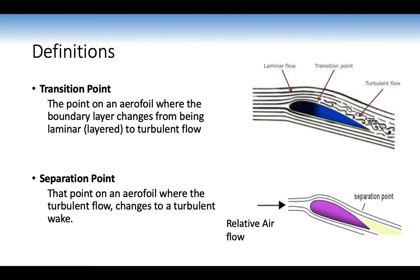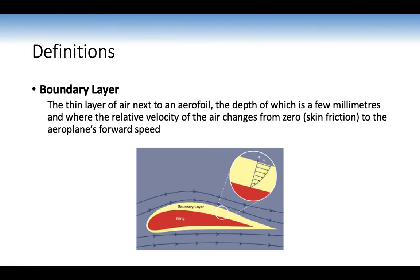As the relative airflow comes along, the turbulent flow changes to a turbulent wake at the separation point. Since the airflow is no longer attached, that's when the stall occurs. The boundary layer is the thin layer of air next to an aeroplane — only a few millimetres deep — where the relative airflow velocity changes from zero at the skin to the aeroplane's forward speed. The boundary layer can be either laminar flow, turbulent flow, or turbulent wake.